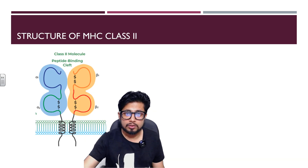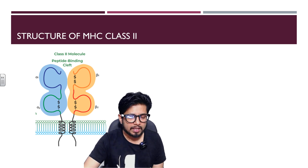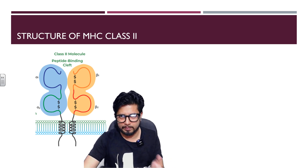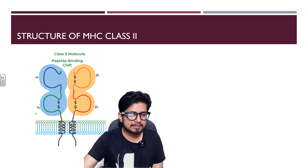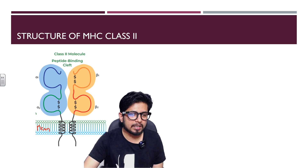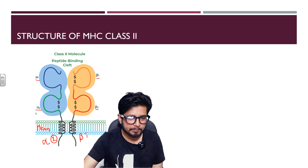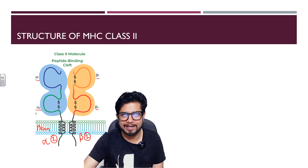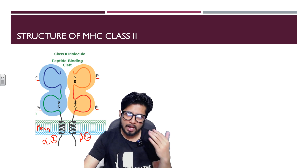Let's start with the structure of MHC class 2. Here you can see a simple drawing that gives you the structure of MHC class 2. In MHC class 2, this is the cell membrane and this is the MHC receptor. The receptor is made with two alpha subunits and two beta subunits. The alpha unit is anchored to the cell membrane — anchorage by alpha and two anchorages by beta. In contrast, MHC class 1 has only one anchorage by alpha units.